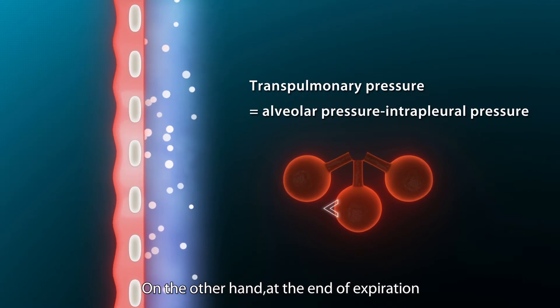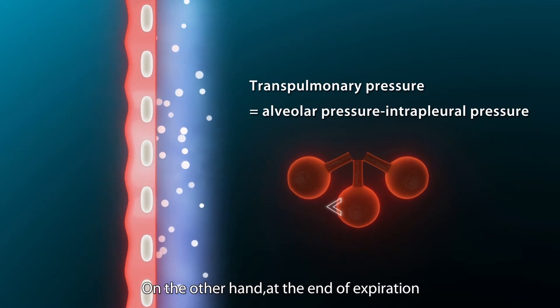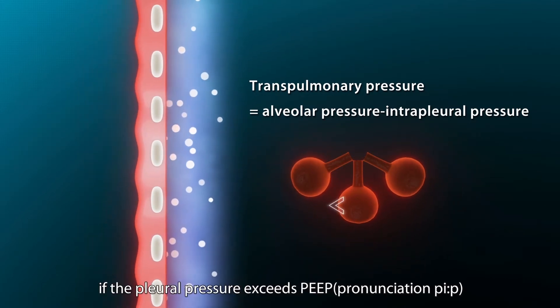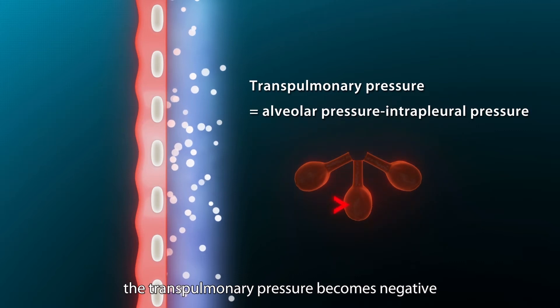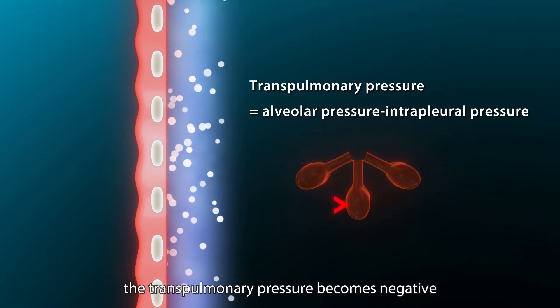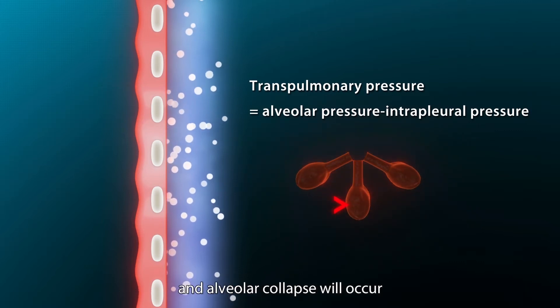On the other hand, at the end of expiration, if the pleural pressure exceeds PEEP, the transpulmonary pressure becomes negative and alveolar collapse will occur.